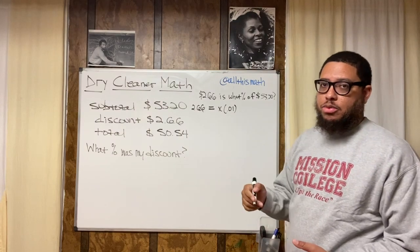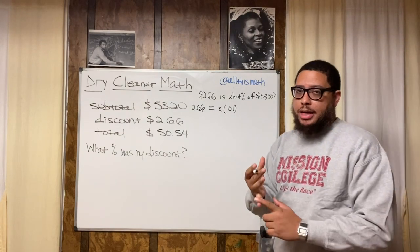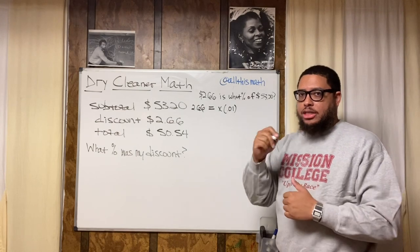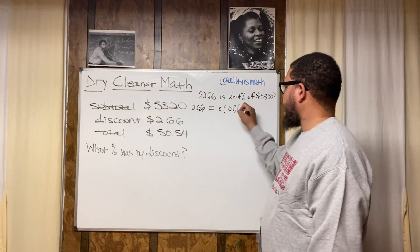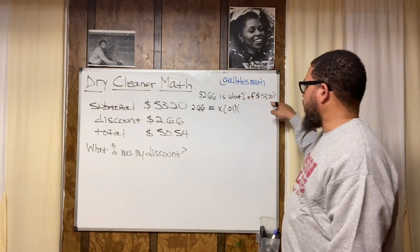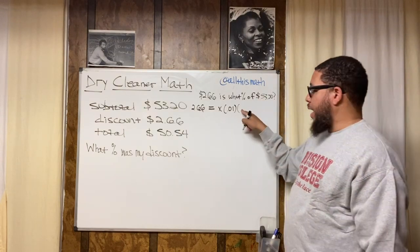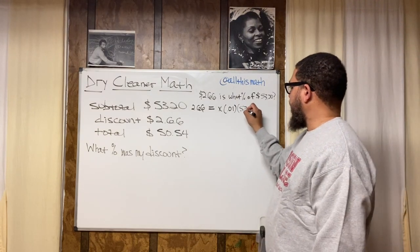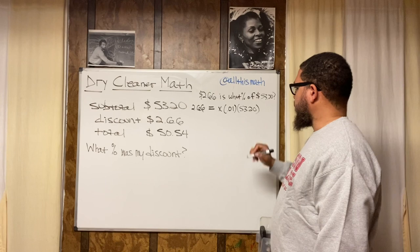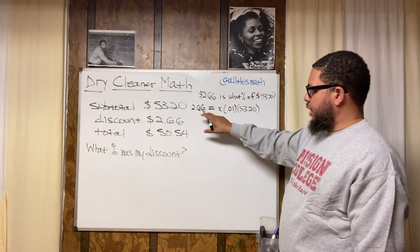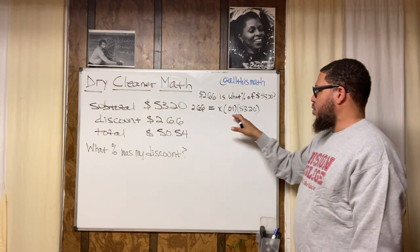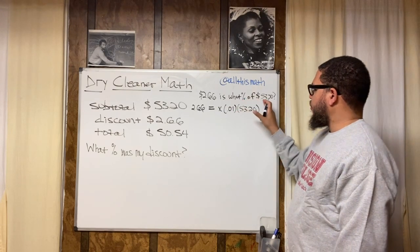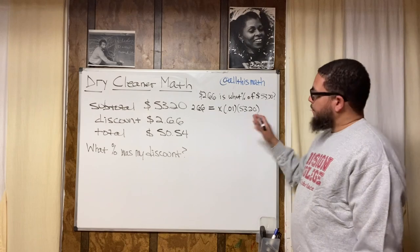You don't have to use a multiplication symbol — you could use an x, a dot, an asterisk, or just parentheses. Since it's 'of 53.20,' we're multiplying by 53.20. So we can just use parentheses. Our equation is: 2.66 = x × 0.01 × 53.20.